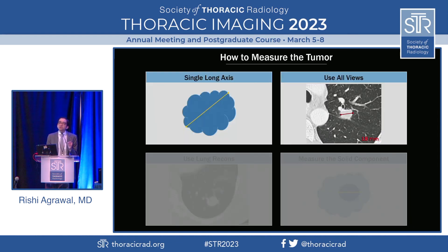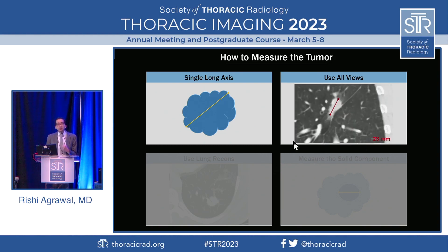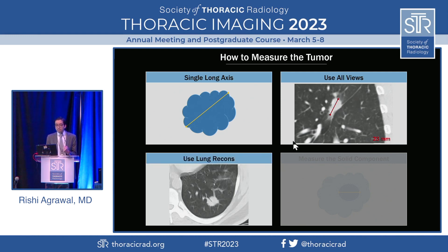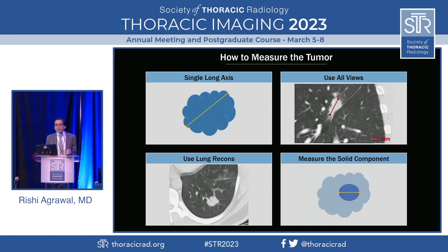It's important to know how to measure the tumor. We take the single longest axis, which is different from lung RADS where we take the mean of the long axis and the orthogonal axis. For TNM staging, it's the single longest axis. Use all your views — if the tumor is biggest on the sagittals, use sagittals. For lesions with a ground glass and solid component, measure the whole lesion, but only the solid component goes towards the T category.